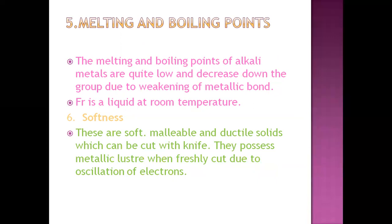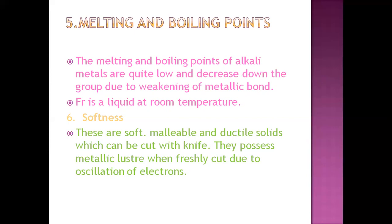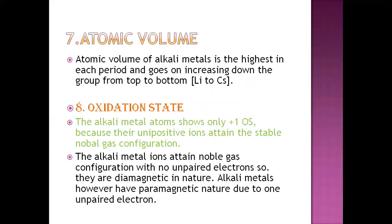The melting and boiling points of alkali metals are quite low and decrease down the group due to the weakness of the metallic bond. Cesium is liquid at room temperature — this is an exception. Alkali metals are soft, malleable, and ductile solids that can be cut with a knife. Sodium, for example, can be cut as easily as butter. When freshly cut, they possess a metallic luster due to the oscillation of electrons.